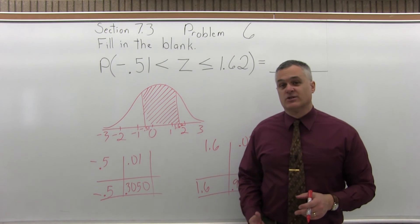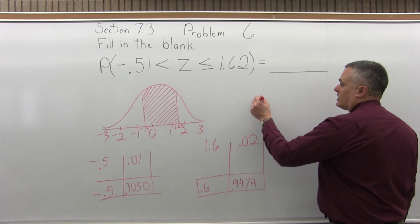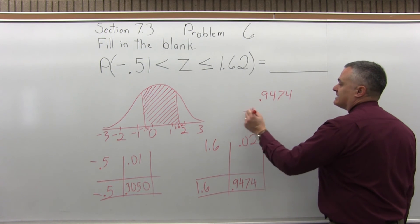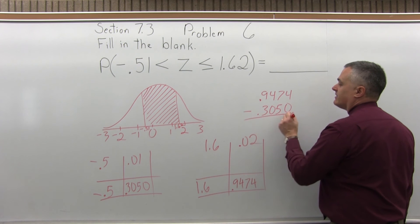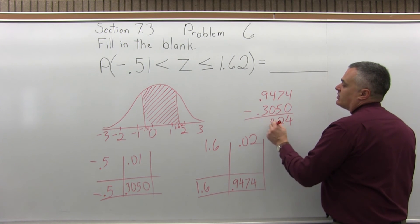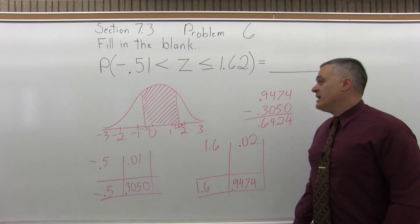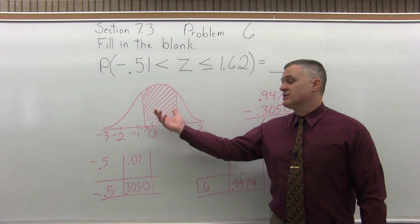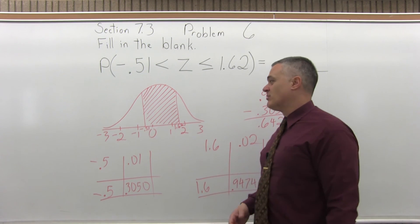And now I have two chart values. So now what I do with the two is I subtract them. And you want to do the larger value, 0.9474 minus the smaller value, 0.3050, which you can do on your calculator. And when you do that subtraction, you'll get 0.6424. Now you want to subtract in an order that gives you a positive result, because this answer is a probability, it has to be positive. You can't have a negative probability.